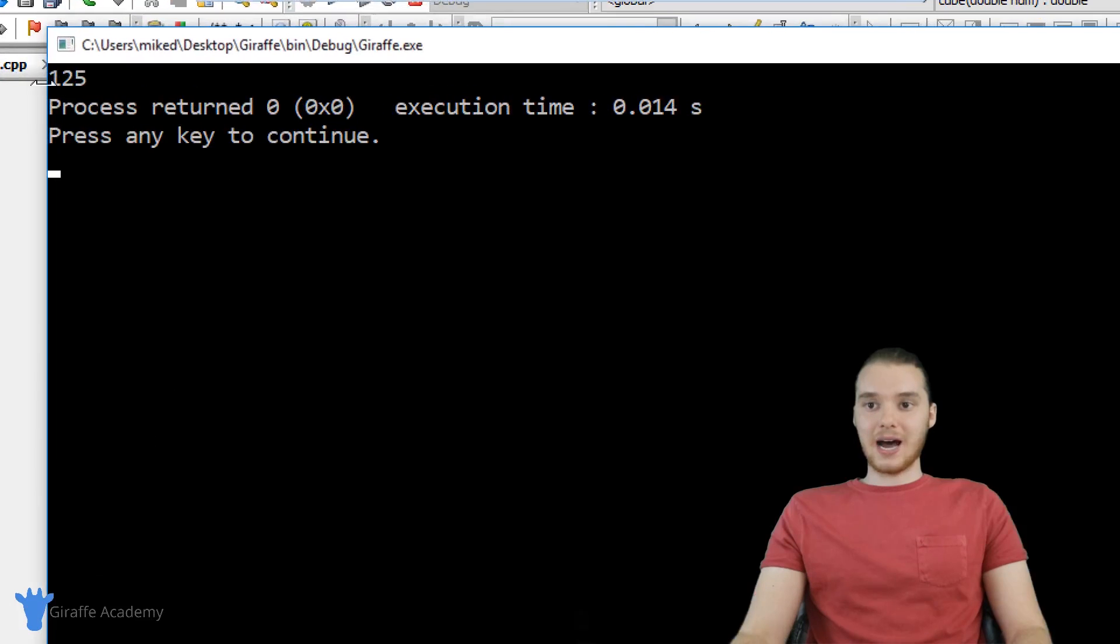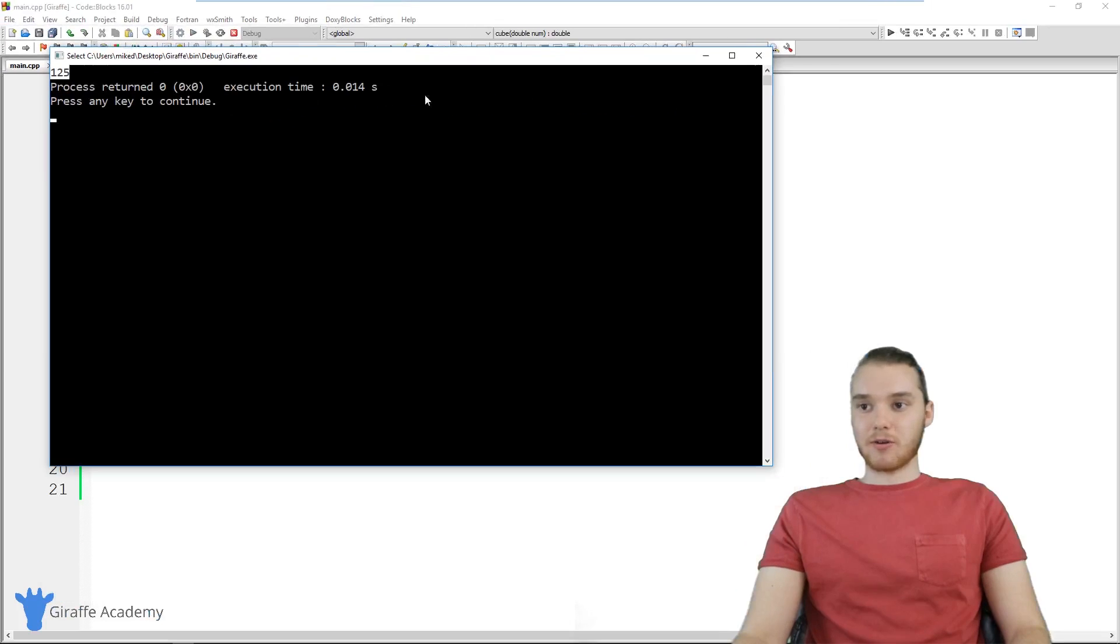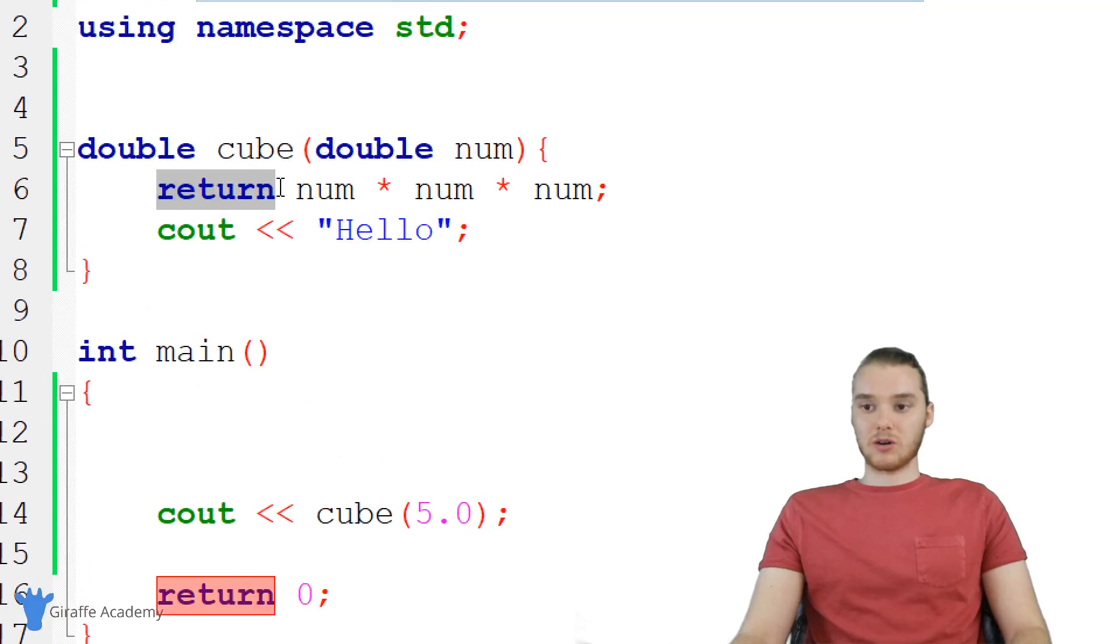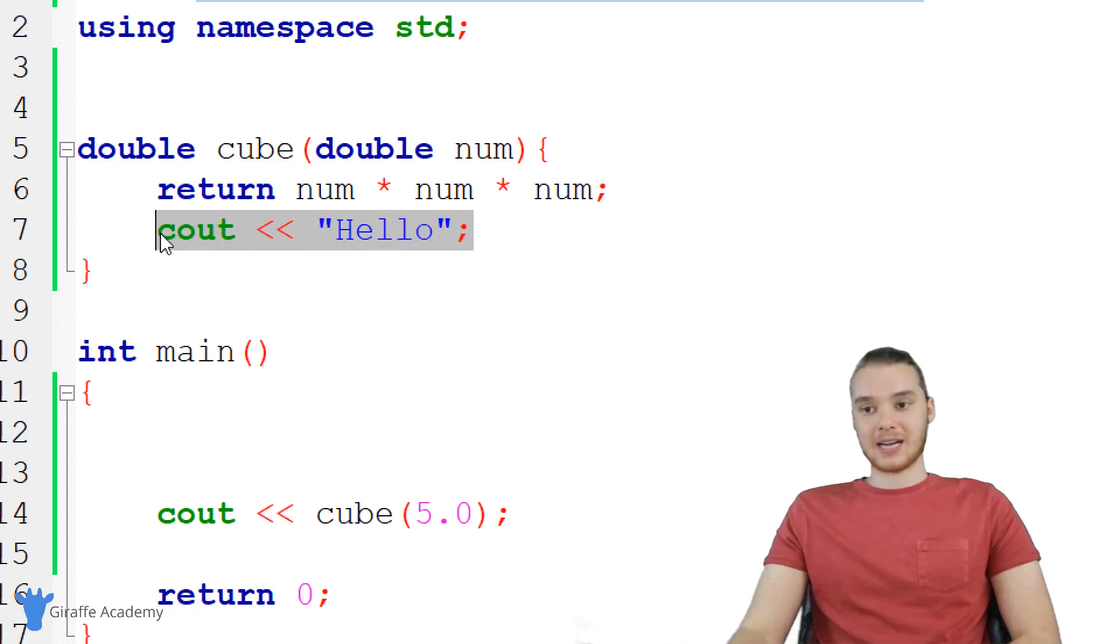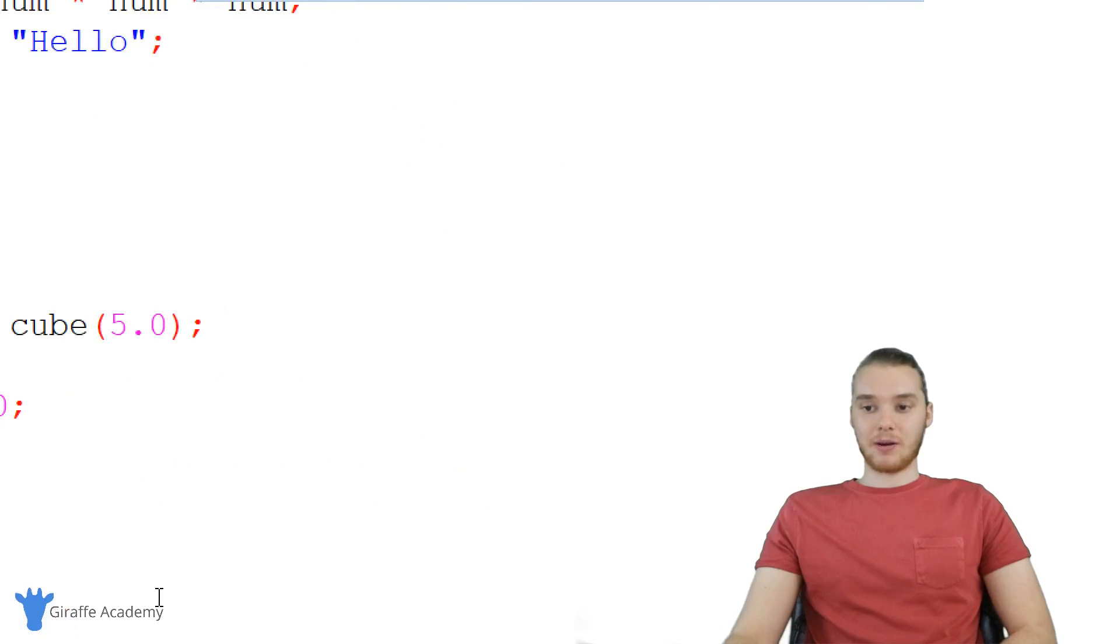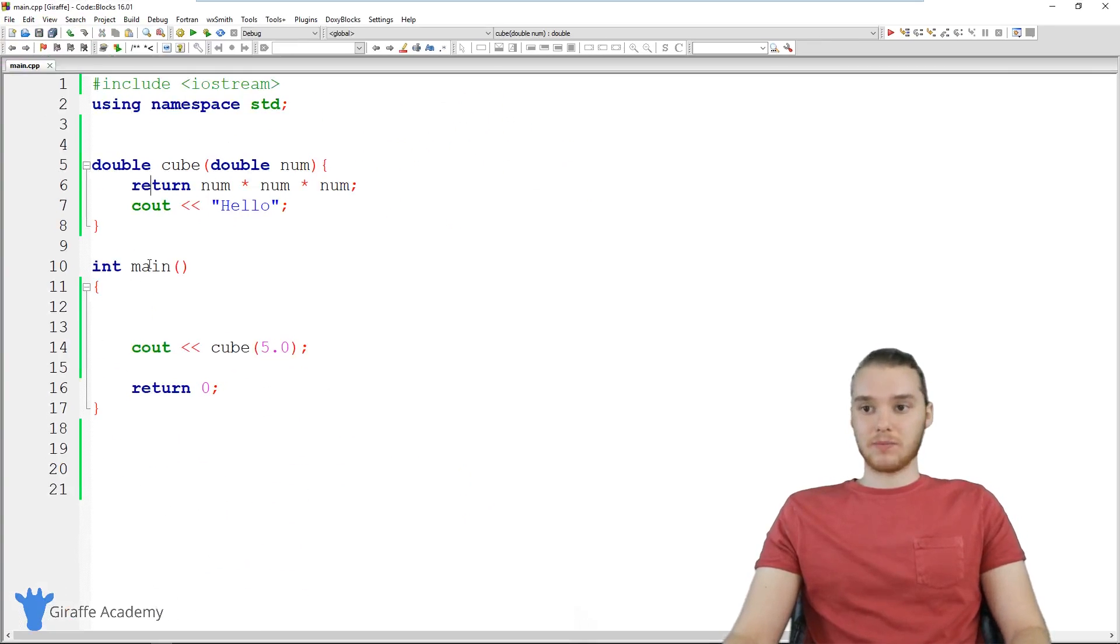when I run my program now, you'll notice that it's not printing out Hello, even though we're executing that cube function, even though we're executing all that code, it's never printing out Hello. That's because whenever we use this return keyword, it's going to break us out of the function. So this line of code is actually never going to get reached. When C++ sees this line it's just going to break out and we'll head back down to the main method. So that's essentially what this is doing.